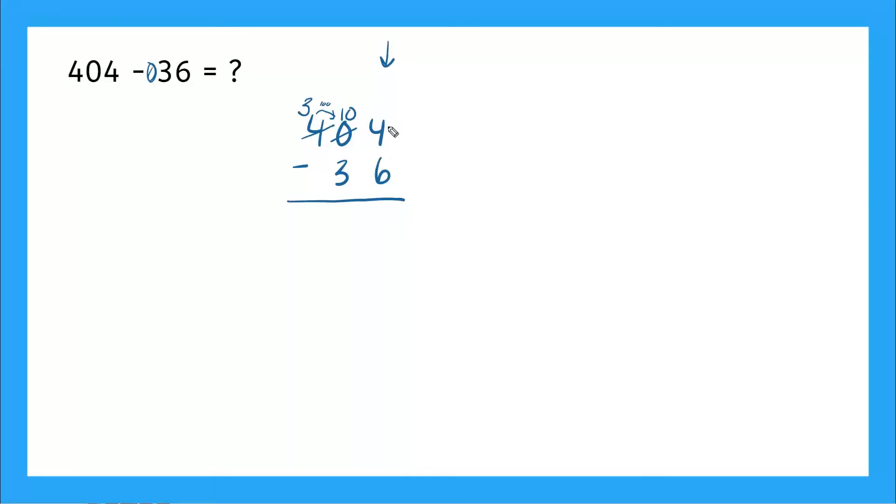But I still need to borrow to be able to do my subtraction in the ones place. So I'm back to this 10. I'm going to take one of the tens. So now I have just nine and I'm giving the 10 to my one. So 10 plus four, that gives me 14. So 14 minus six, that gives me eight.